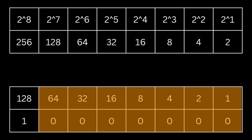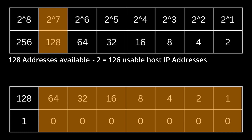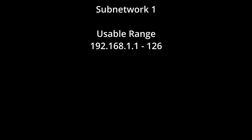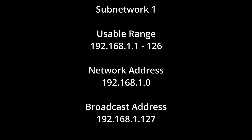The host portion of the subnet mask now has seven host bits remaining. Two to the power of seven is 128 addresses in that subnetwork. We subtract two to account for the network and broadcast address, leaving 126 usable host IP addresses. Subnetwork one is 192.168.1.1 through to 192.168.1.126 for usable hosts. The network address is 192.168.1.0 and the broadcast address is 192.168.1.127 — remember, counting 128 values from zero gets you to 127.